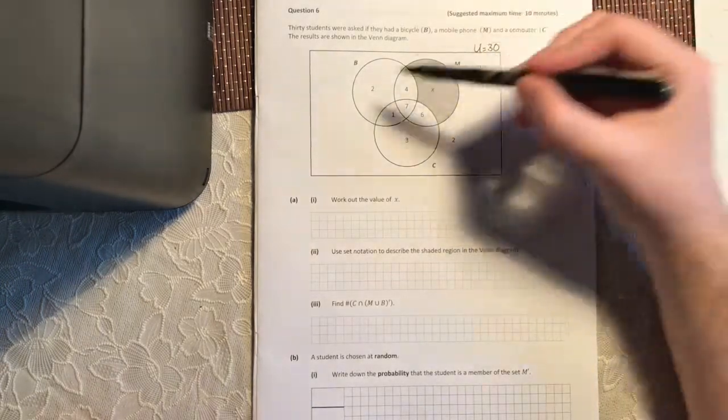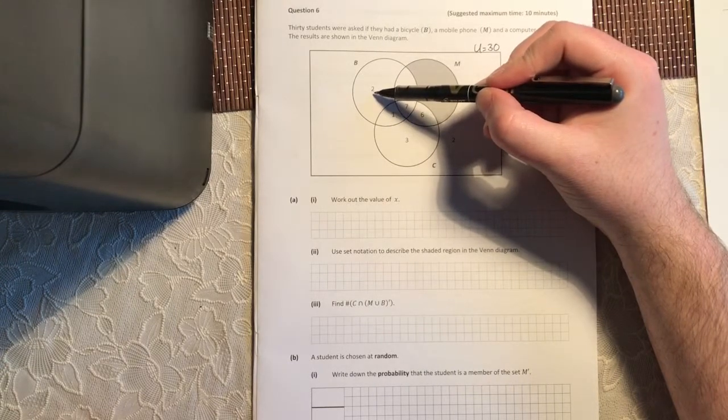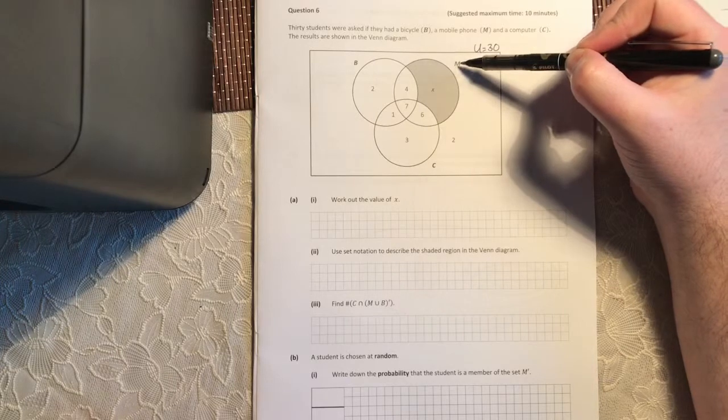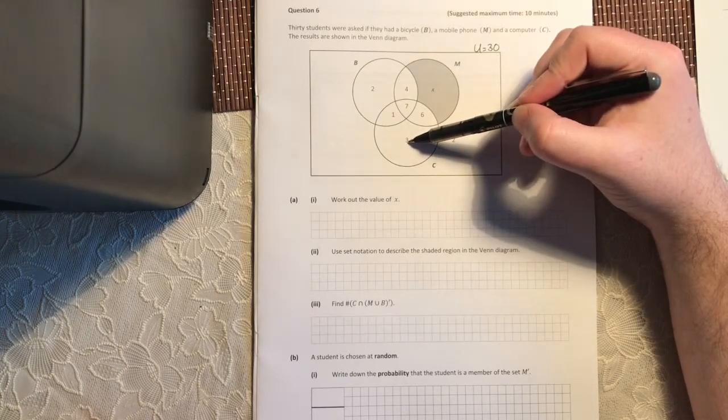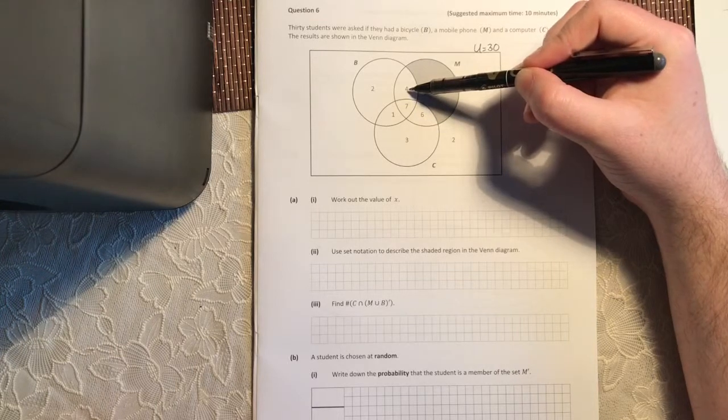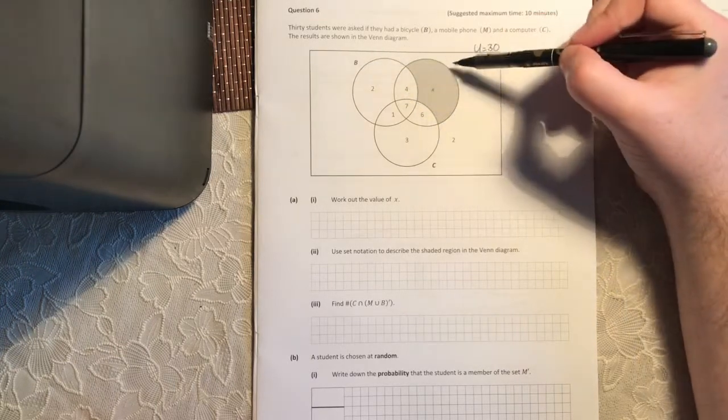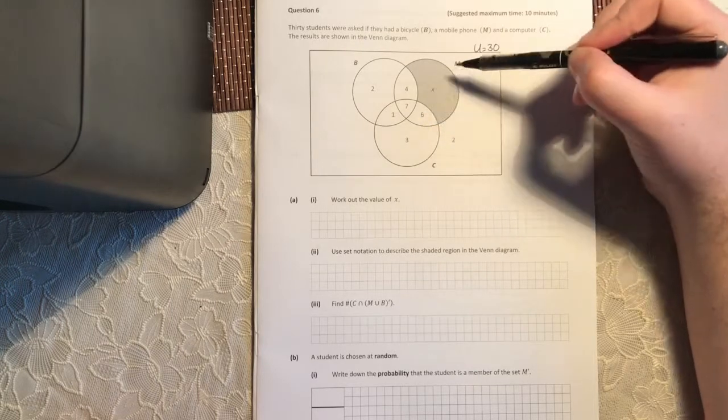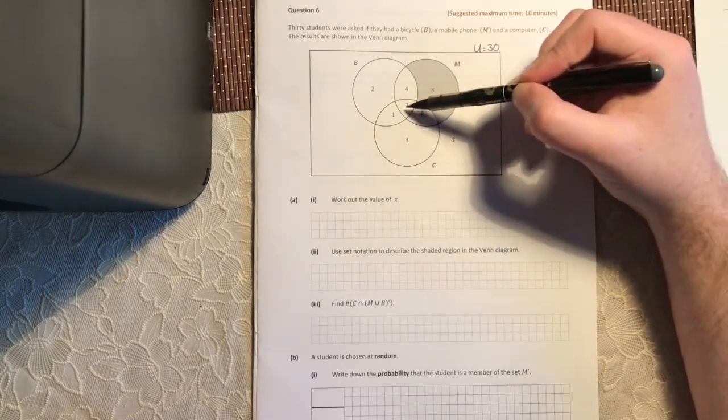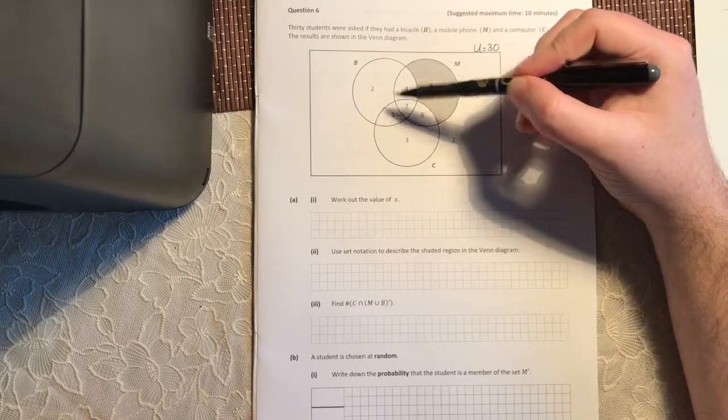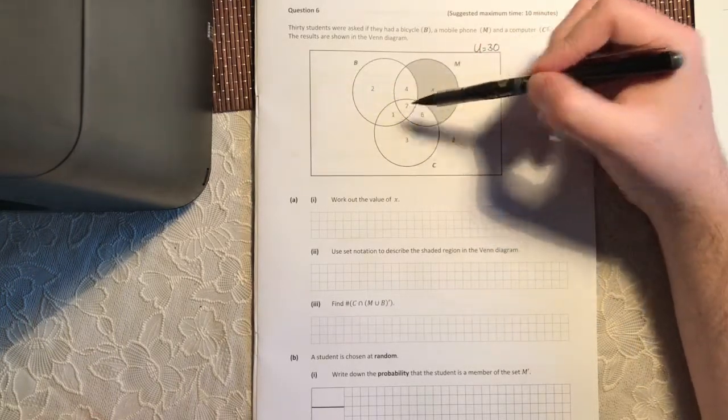Alright, so here's our Venn diagram here. This two represents two students that only have a bike. This X represents students who only have a mobile phone. This three represents students who only have a computer. This four represents students who have a bike and a mobile phone but do not have a computer.